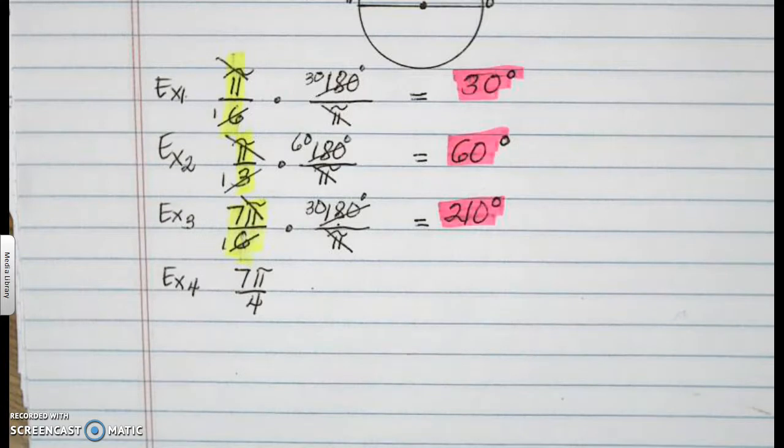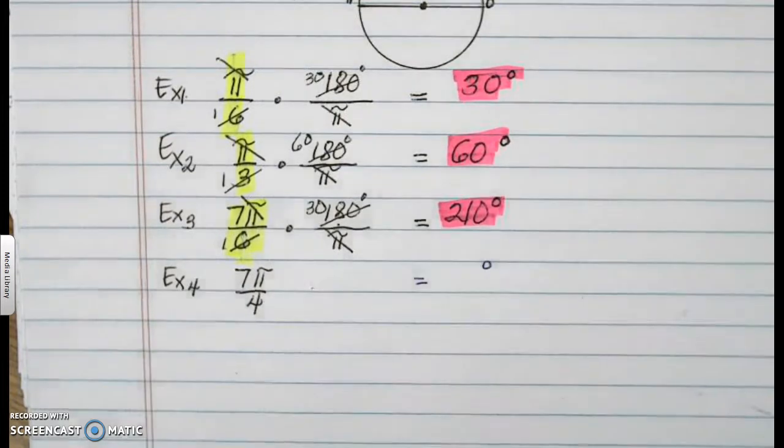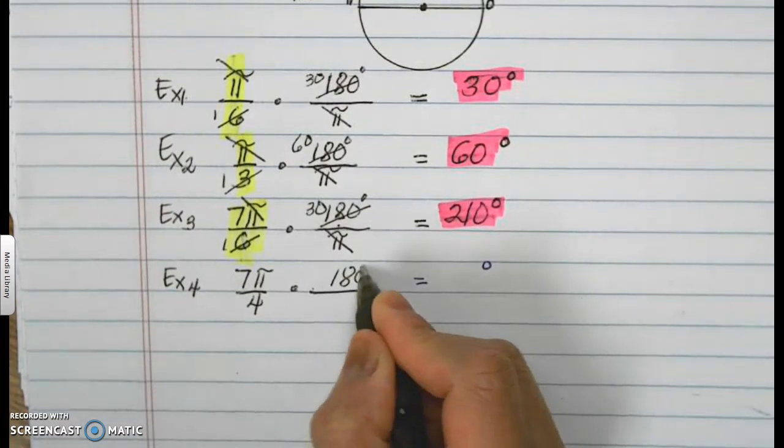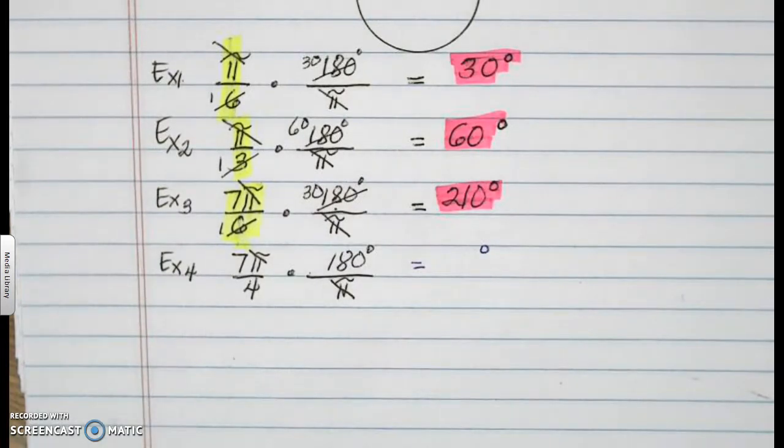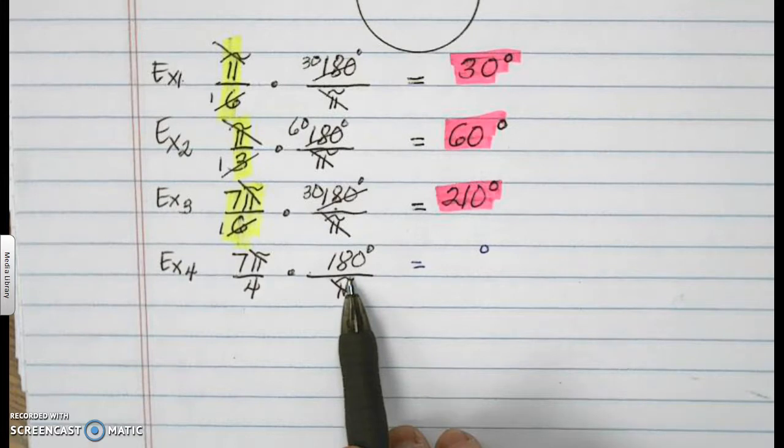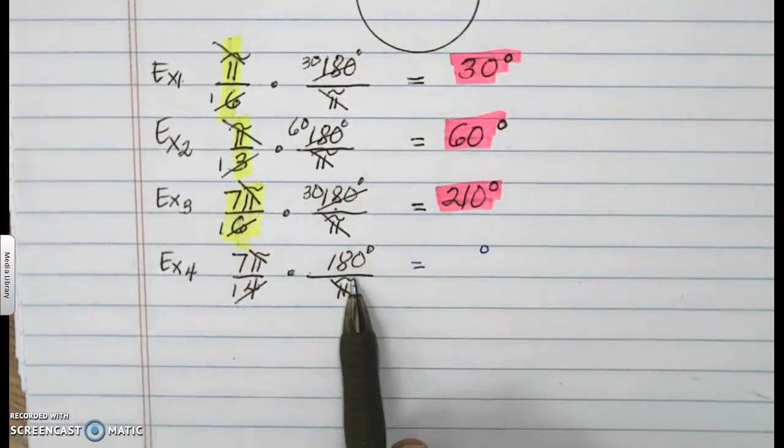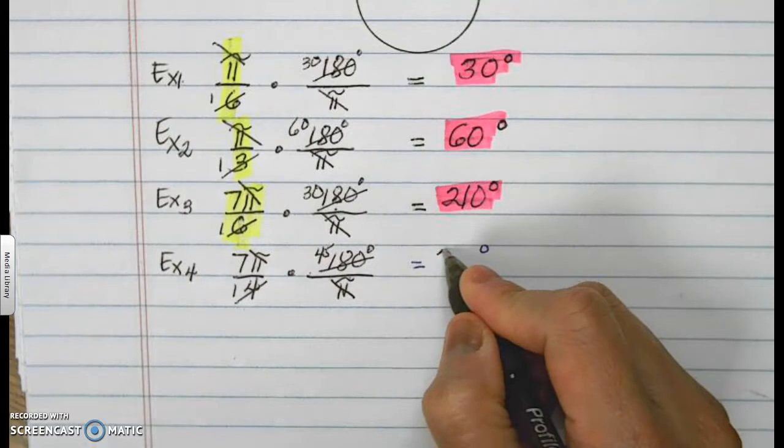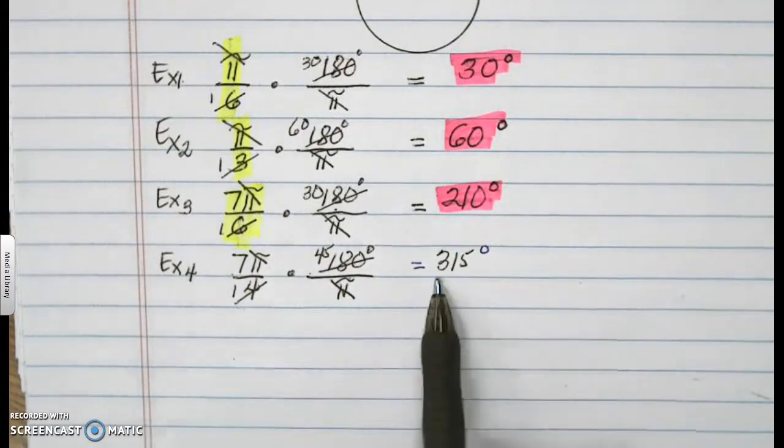For our last and final example, I have 7 pi over 4. And I want to turn this into where it has degrees. Therefore, I must multiply it by 1 in the form of 180 degrees over pi. And again, your purpose is to get rid of this. So we're getting rid of that. But it's not turning into a 0, it's turning into a 1. I believe that 4 and 180 degrees have a greatest common factor of 4. If I divide 4 by itself, it turns to a 1. 180 degrees divided by 4 gives you 45. 45 times 7 is 315. Therefore, 7 pi over 4 is the same as 315 degrees.